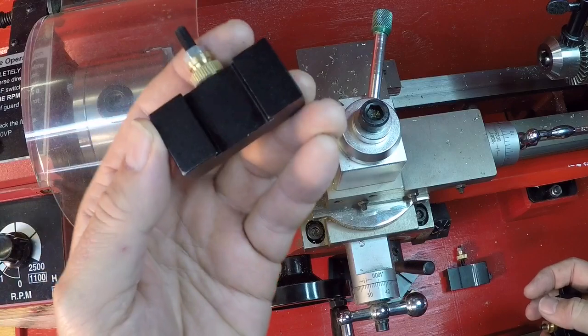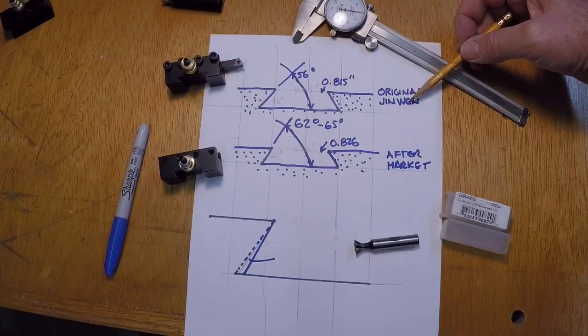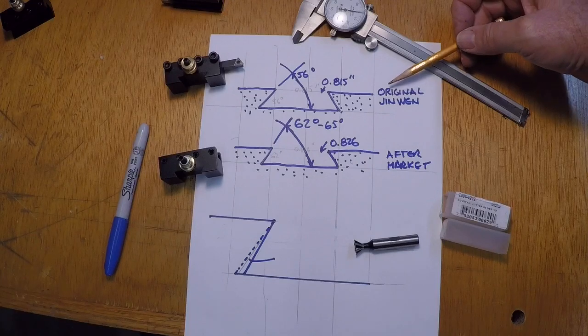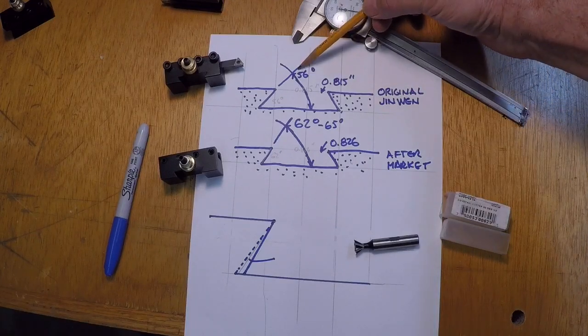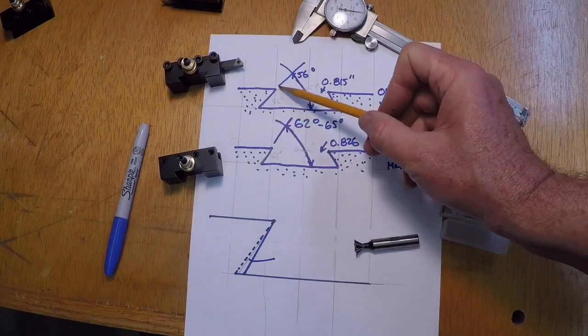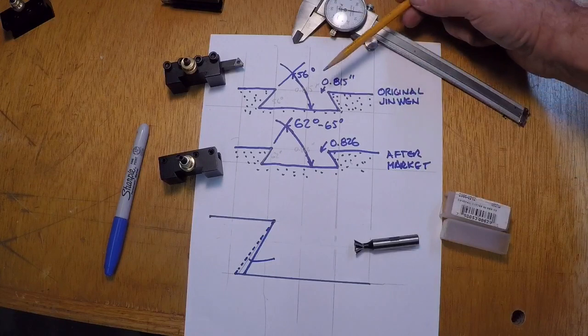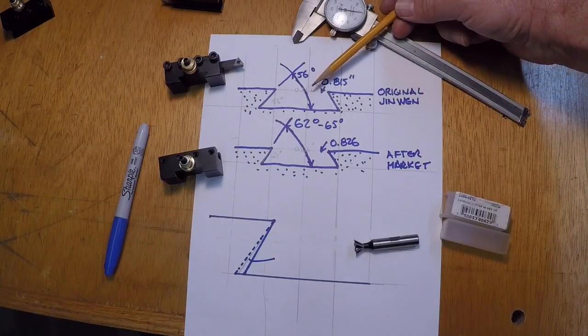So let's take a look at what's going on with that. What I found was that the original tool holders supplied by Genwin have about a 56 degree taper in this dovetail versus you know 60. I always thought 60 was the nominal number but it's 56 and the tool post itself is just about like that.